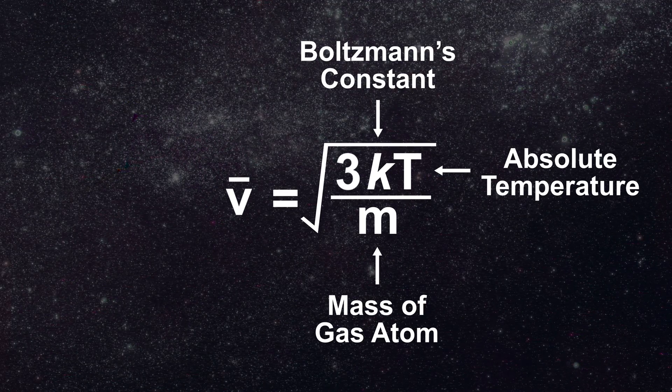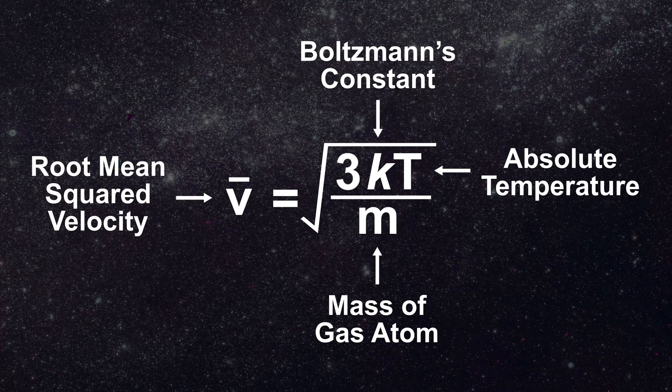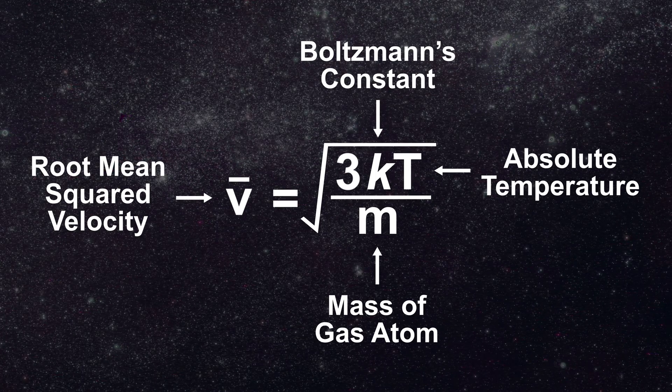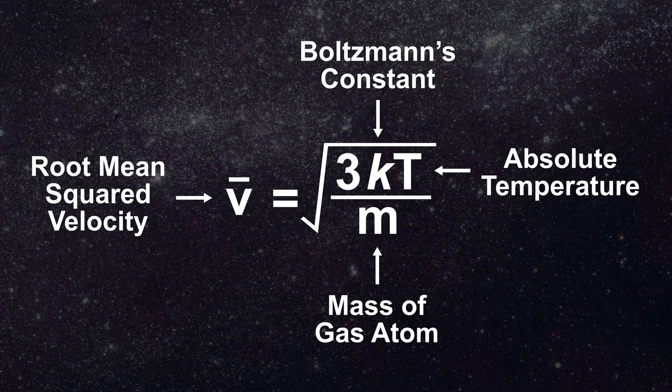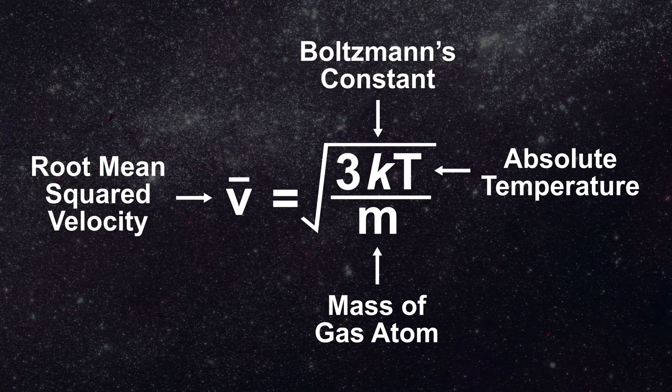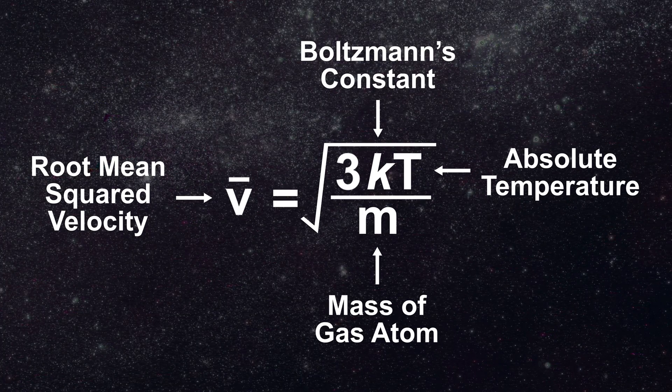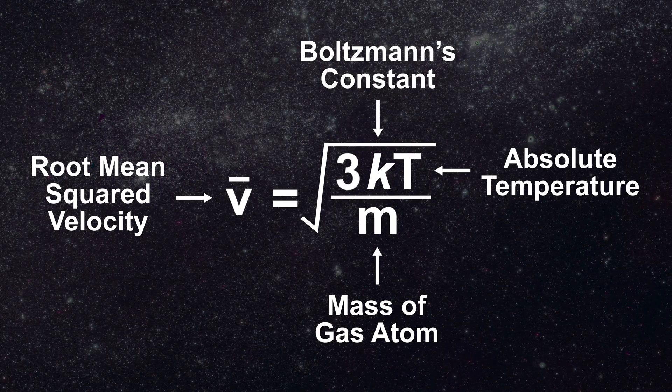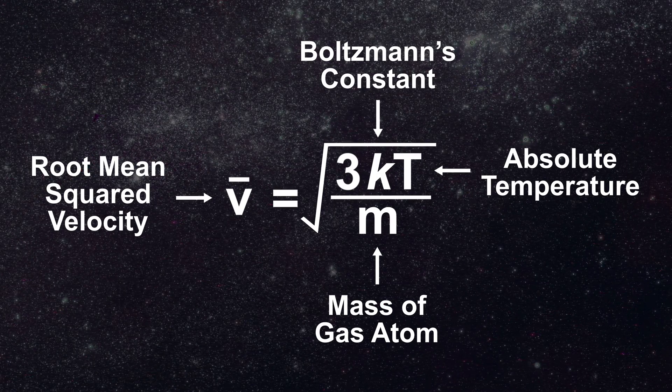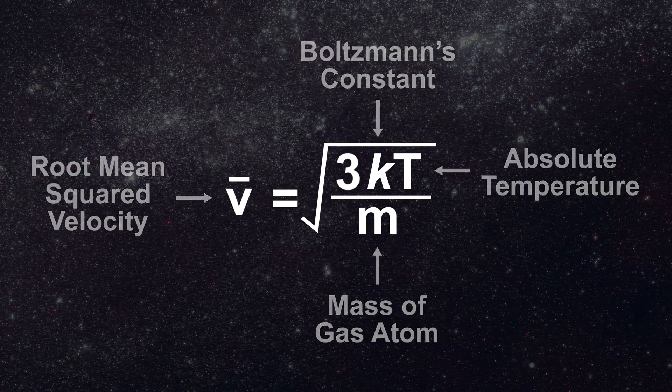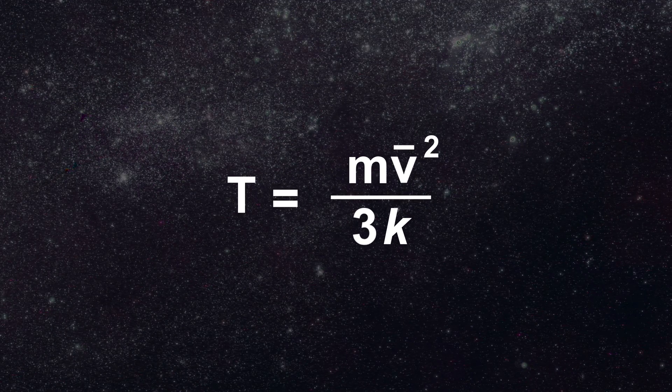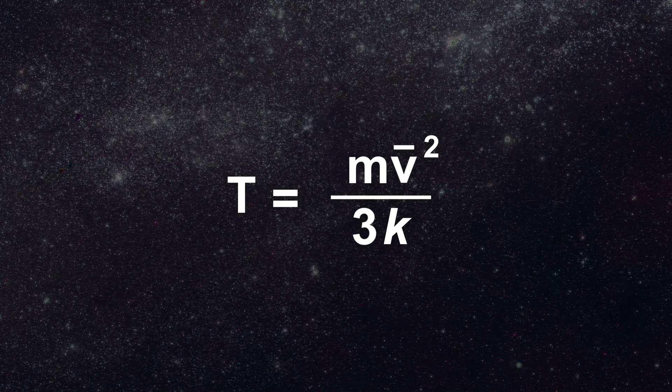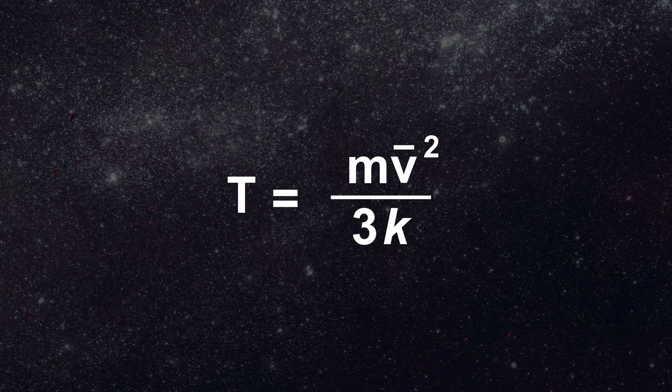Note that changes in the root mean squared velocity are governed by changes in the square root of the absolute temperature since k is a constant and since the mass of an individual atom or molecule is an intensive property of the system which does not vary with the number of particles and therefore also behaves as a constant. We note with rearrangement the temperature is an intensive property of our system as required by the zeroth law.